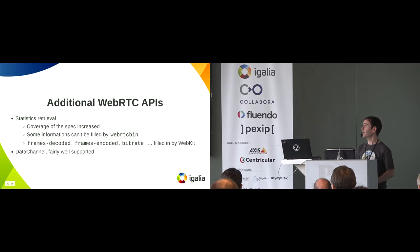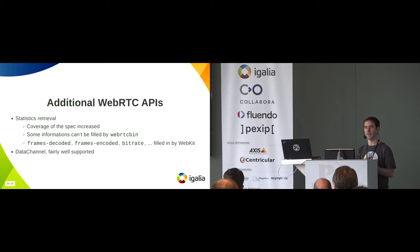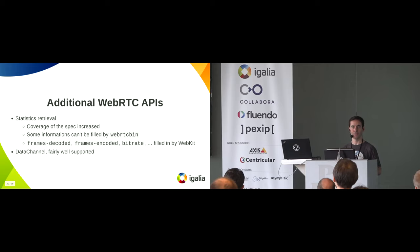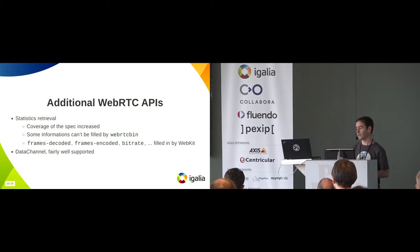Another API is called the data channel. If you want to send or receive data over the wire, we didn't really have many issues with the integration — it went quite well. It's again a one-to-one mapping with the spec.